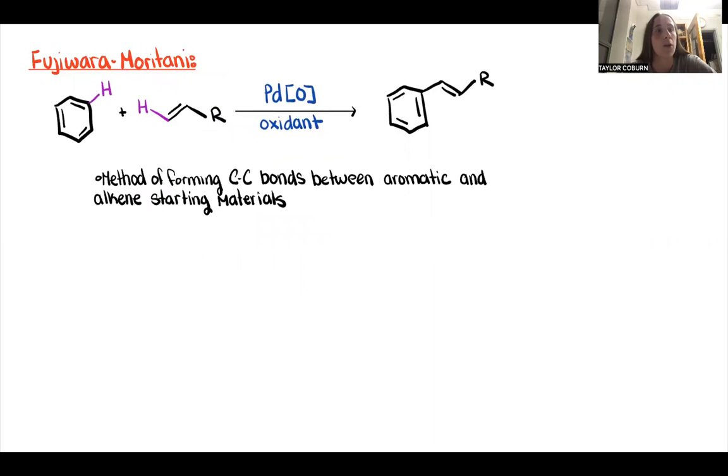Our second reaction is the Fujiwara-Moritani reaction, and this is another method of forming carbon-carbon bonds, but this one instead uses aromatic and alkene starting materials. Though I have palladium listed, it's important to note that that's not necessarily specific to this reaction, and in the literature, it is possible to see other metals being used.